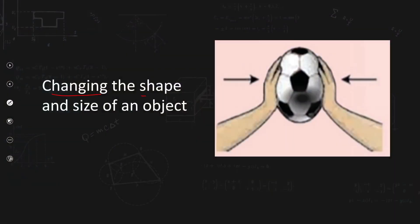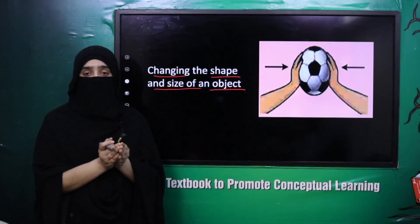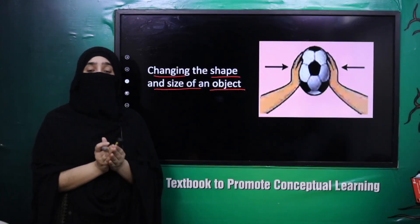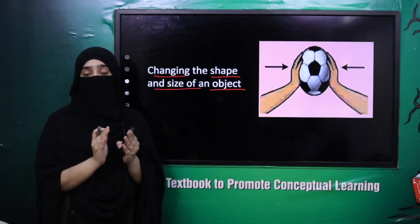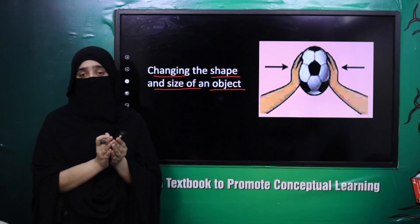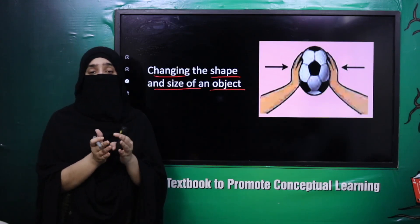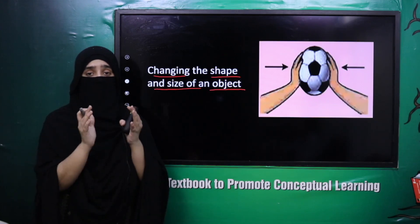Next is changing the shape and size of an object. Jaise jo humne activity ki — humne ball pe force apply ki, to uski shape change ho gayi. So force jo hai wo kisi bhi object ki shape aur uska size change karne mein bhi effect karti hai — uske size aur shape pe bhi effect daalti hai jab hum kisi object pe force apply karte hain.